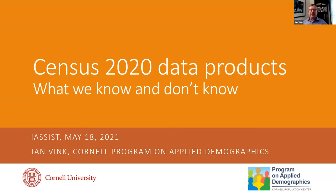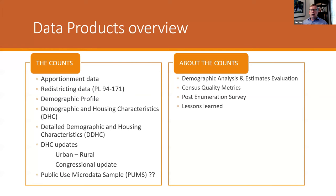Thanks for the introduction. I titled this presentation 'Now: What We Know and Don't Know.' I think I could have held almost the exact same presentation a year ago — since that time, there's not a lot more information coming out of the Census Bureau about the data products, so there are still a lot of unknowns. I want to start with an overview of the data products and split them into two groups: on the left, data products based on census counts, and on the right, products more about accounts that give insights into census quality and coverage.